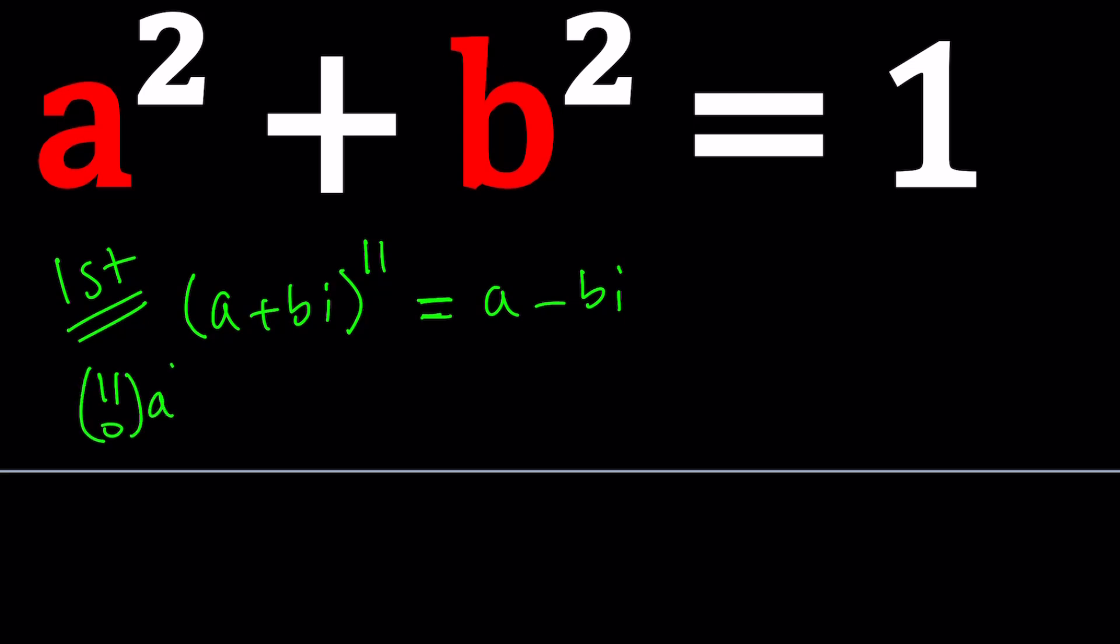11 choose 0, a to the power 11, plus 11 choose 1, a to the power 10 times bi, and then 11 choose 2, those are combinatorial coefficients, a to the 9th bi quantity squared, so on and so forth. There's going to be 12 terms and then you're going to set it equal to a minus bi. And then the next step would be to evaluate powers of i. i squared is going to be negative 1, so you get a real term from there, but this is going to be imaginary.